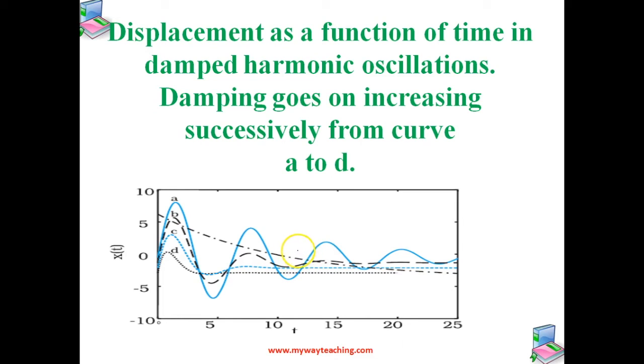Mechanical energy of the undamped oscillator is given by 1 by 2 K A squared. For a damped oscillator, amplitude is not constant; it depends on time. For small damping, we may use the same expression but regard the amplitude as A times e raised to minus BT by 2M. We can use the same expression like 1 by 2 K and represent the amplitude as A squared e raised to minus BT by M.